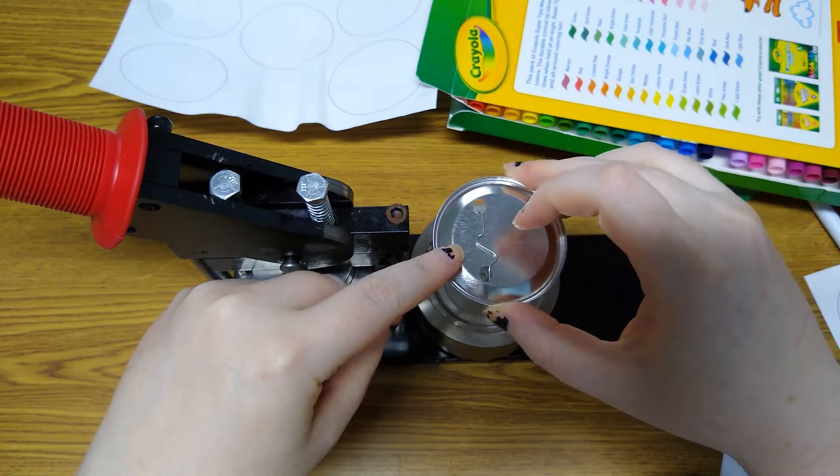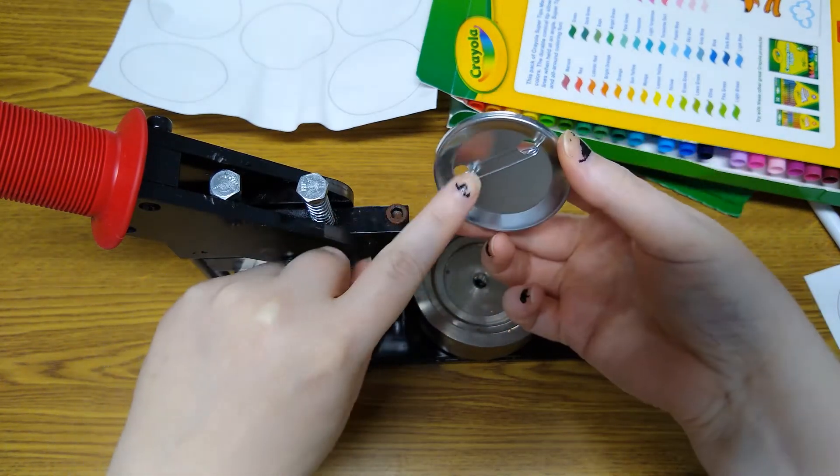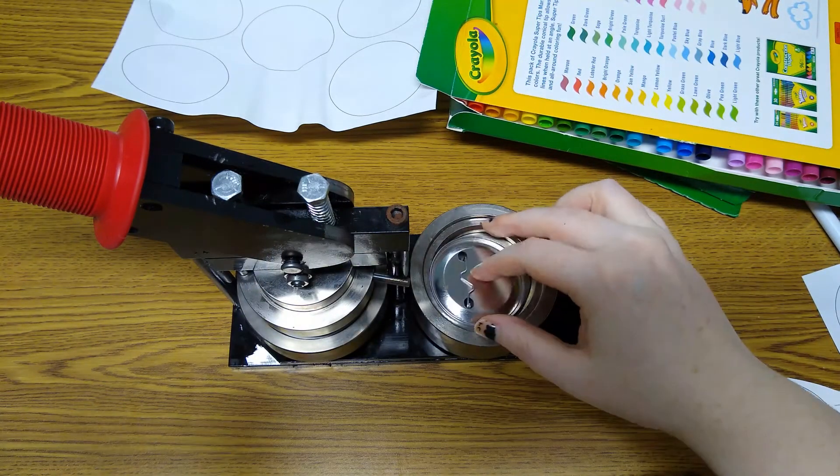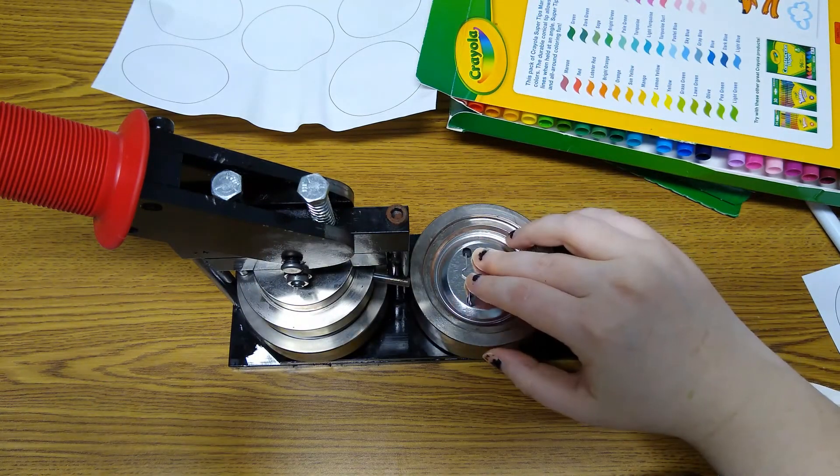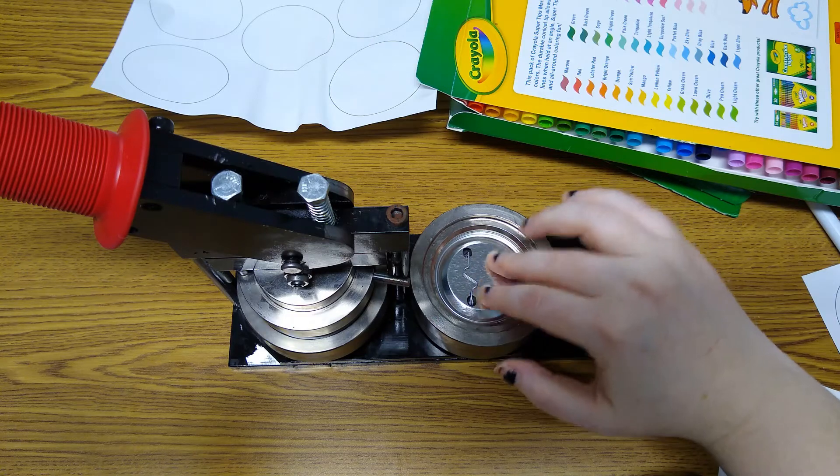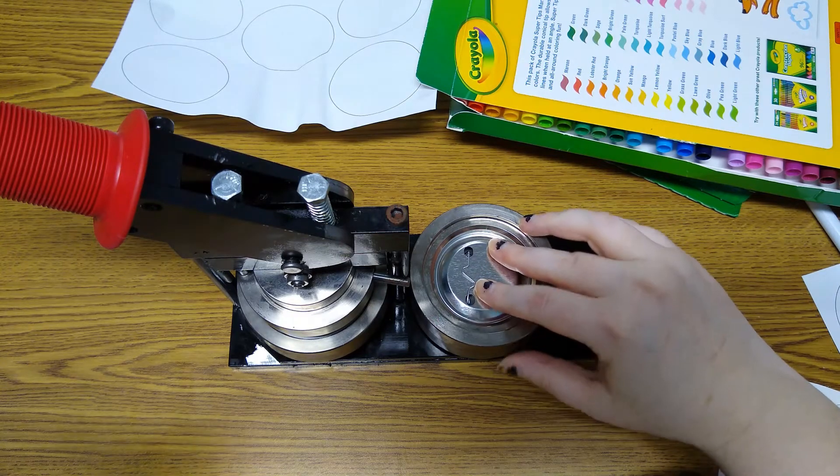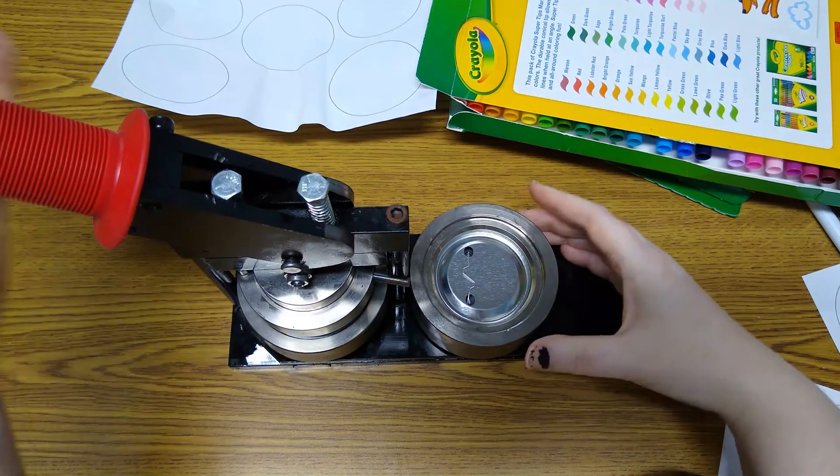And you want to make sure that when you put it in that the outside of the button is down into the wall. So the inside of the button is facing up.